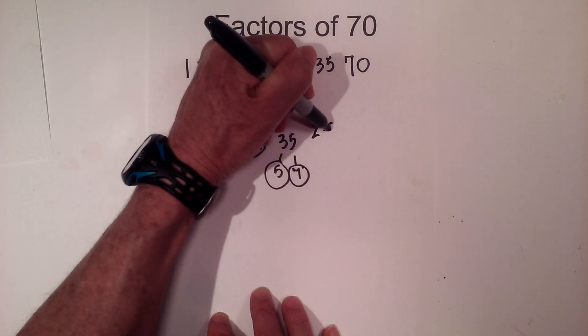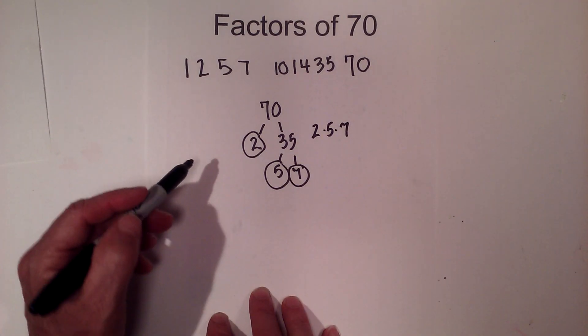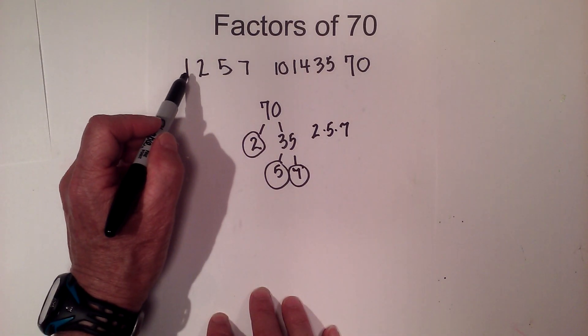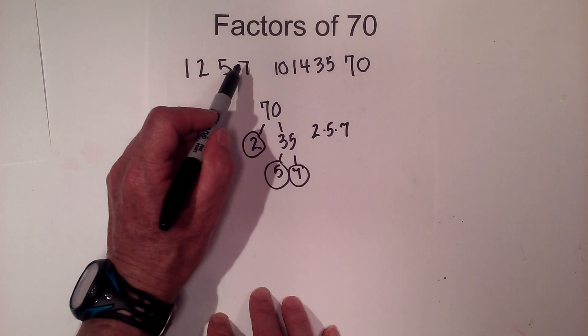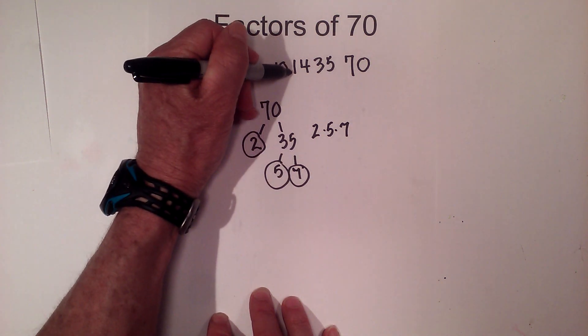So the factors of 70 are 1, 2, 5, 7, 10, I'll put a little comma there, 14, 35, and 70.